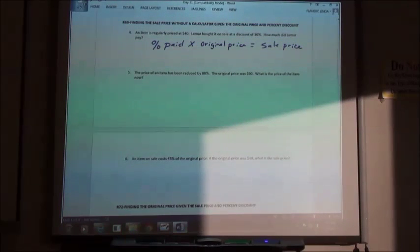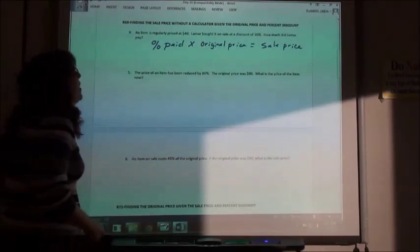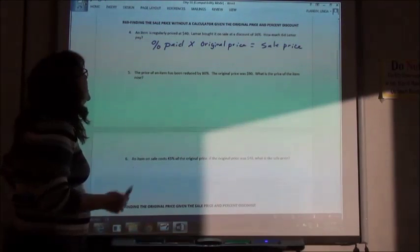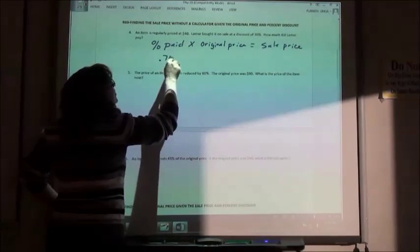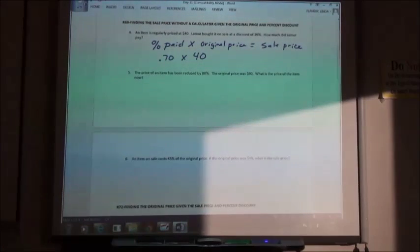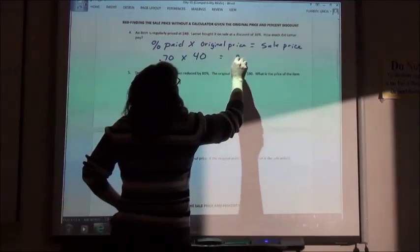So an item is regularly priced at $40. Lamar bought it on sale at a discount of 30%. How much did he pay? Well, we're going to say he paid 70% of the full price or the original price. If we take 70% times 40, we get $28. So his sale price is $28.